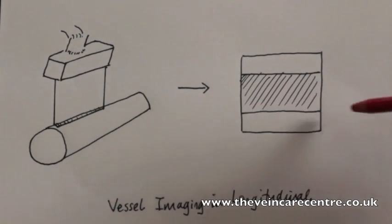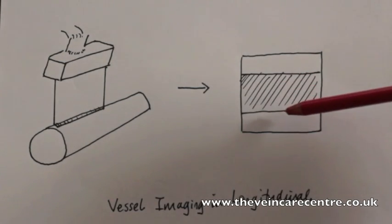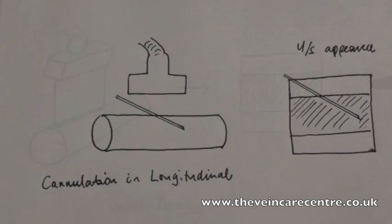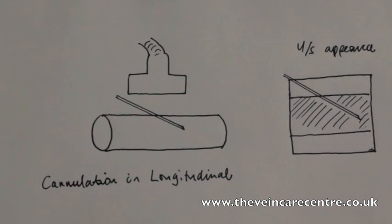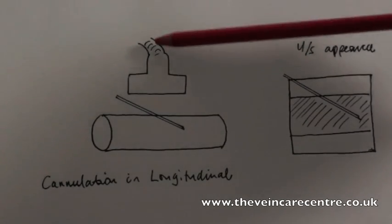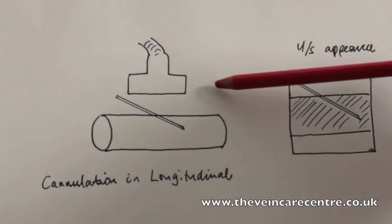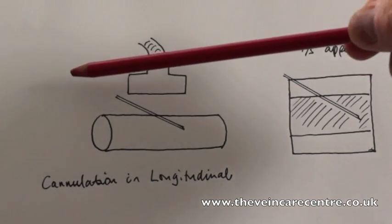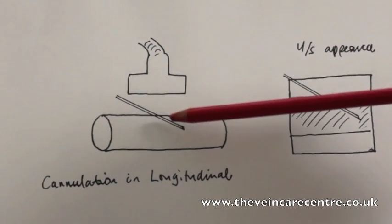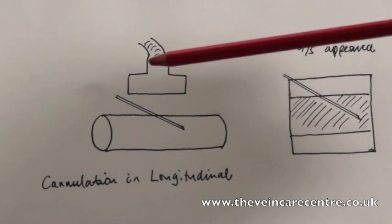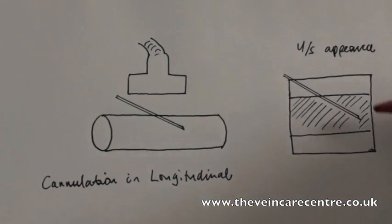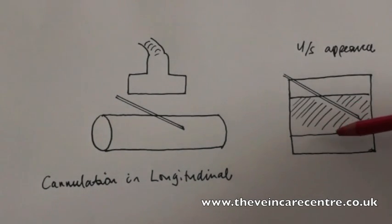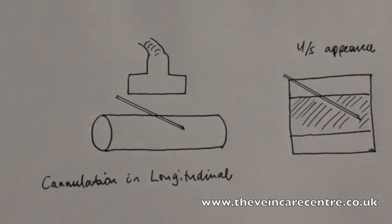Two parallel lines indicating the superficial and deep walls of the blood vessel and the lumen in between. In this schematic diagram, we can see the cannulation being performed in longitudinal section. The ultrasound probe has its long axis parallel to the long axis of the blood vessel and directly over it, and the needle is being inserted at an angle directly over the blood vessel. In longitudinal section, the superficial and deep walls of the blood vessel are seen, and the entire length of the needle is seen on the ultrasound as it passes from superficial to deep.